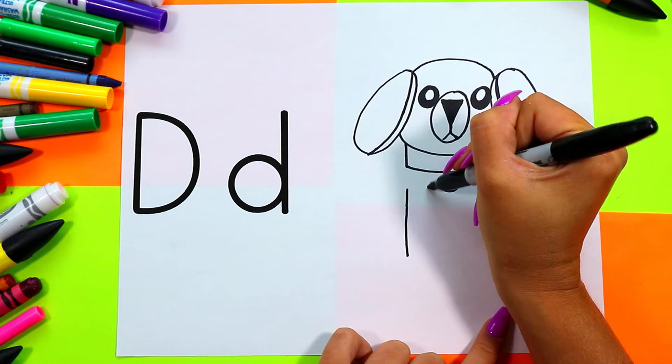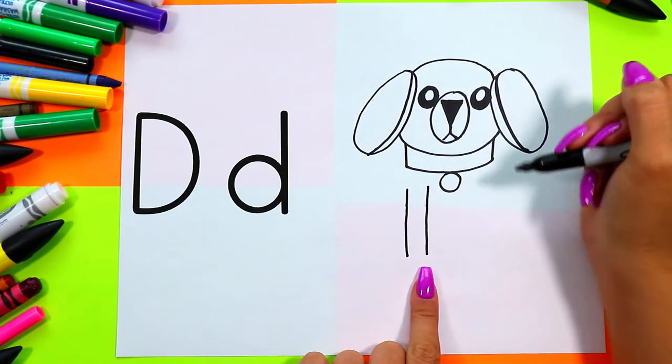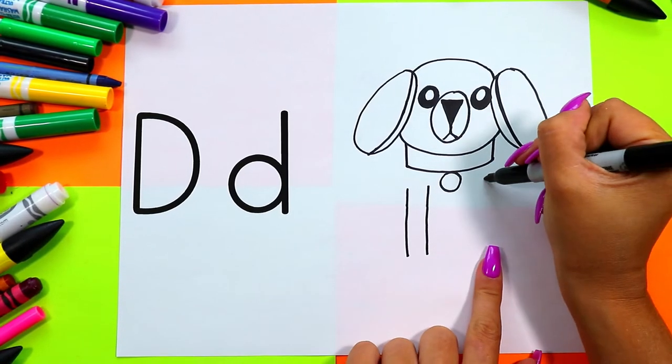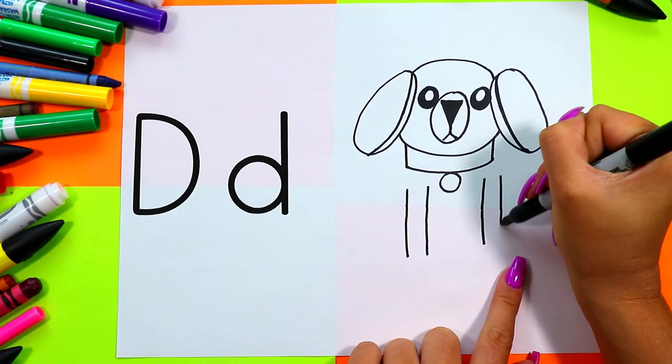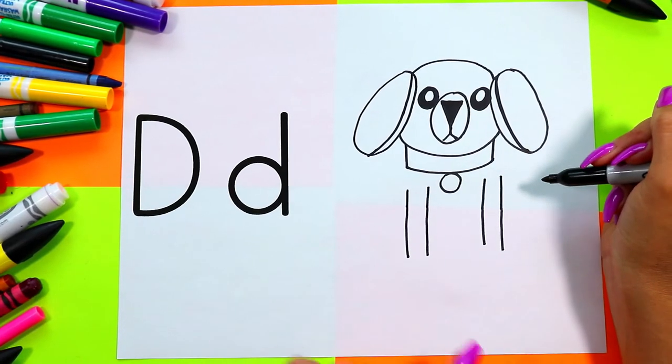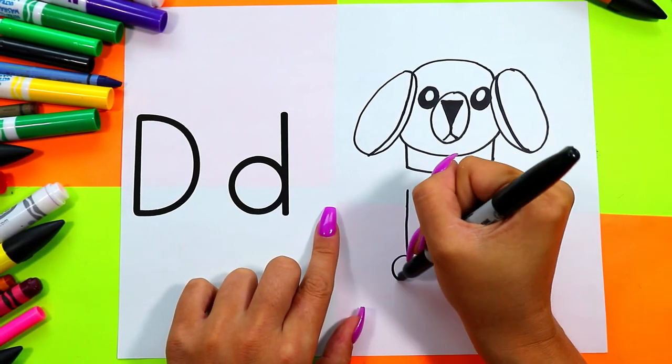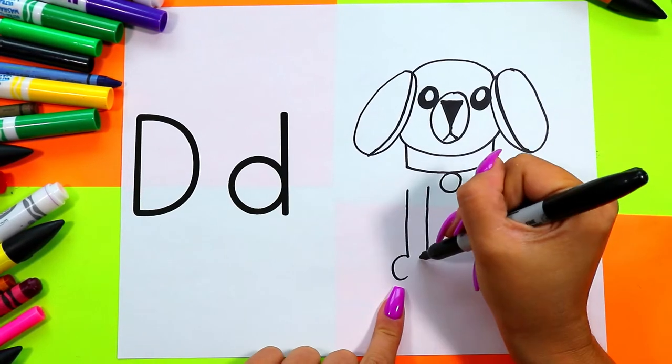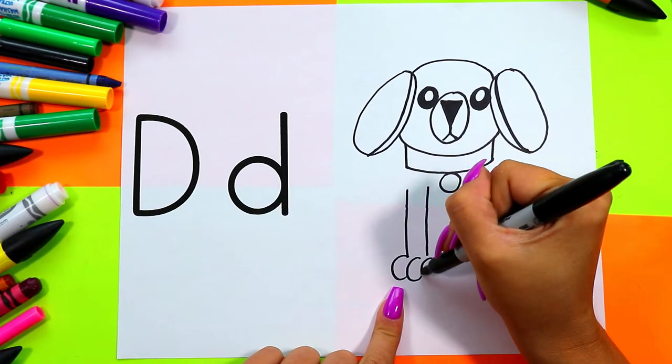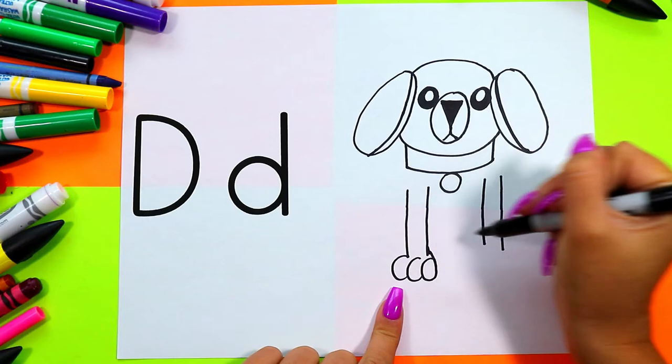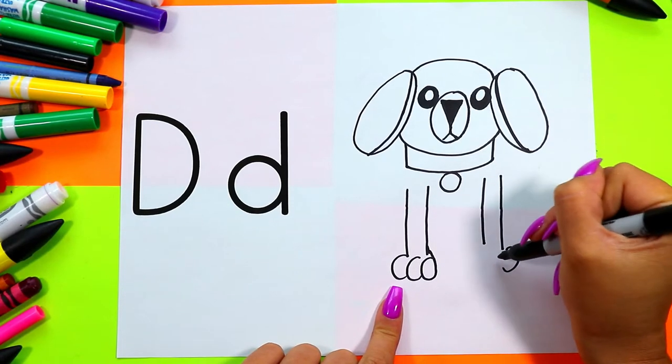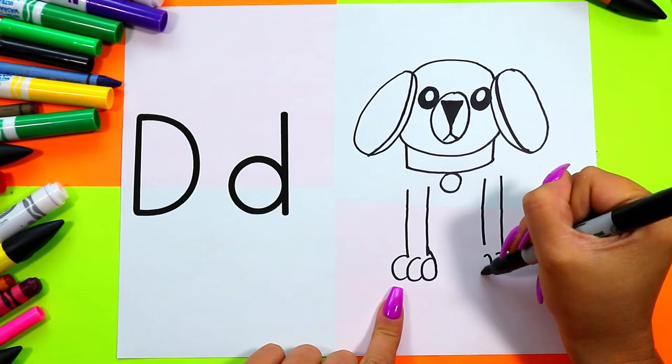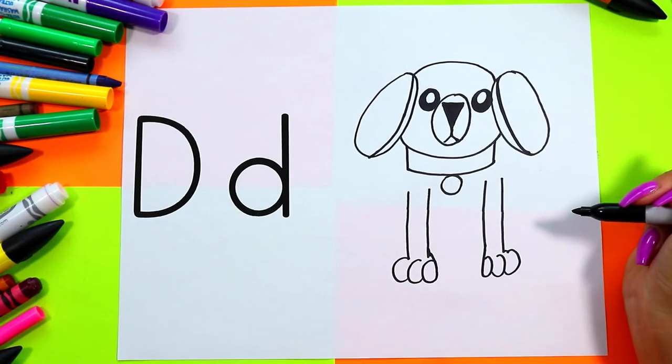Next we're going to draw two lines down for one foot leg and two lines down for another leg. We're going to use our letter C to draw one, two, three toes on each foot.